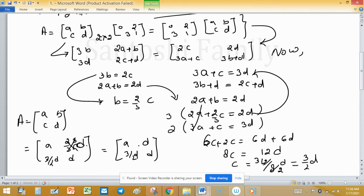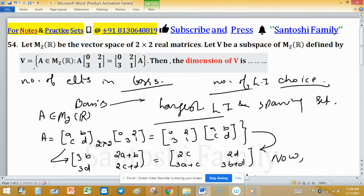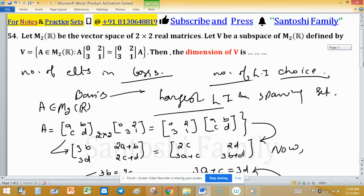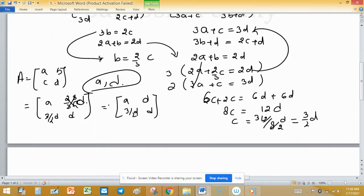If we know the value of a and d, then we can write the elements of V. So we are free at two places to choose entries of the matrix. So the dimension of this vector space V is equal to 2.